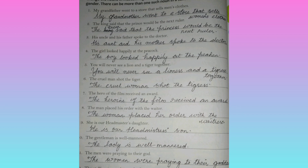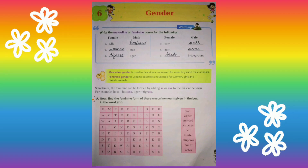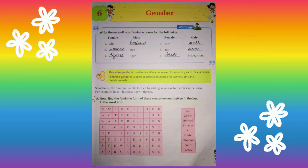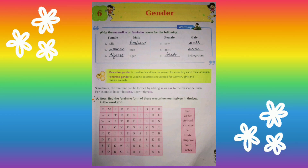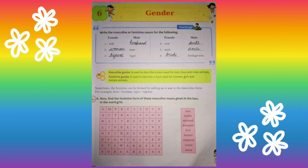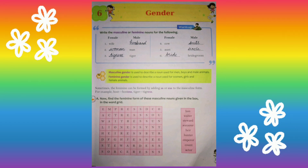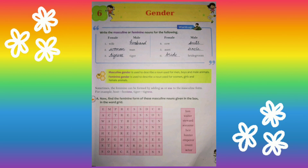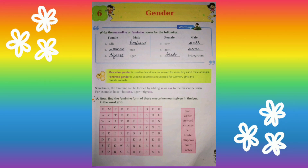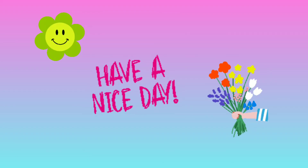So children, hope you have understood the exercises. In today's class we learned three types of genders: masculine, feminine and common gender. All of you learn the definitions and do your exercises carefully. Thank you, have a nice day.